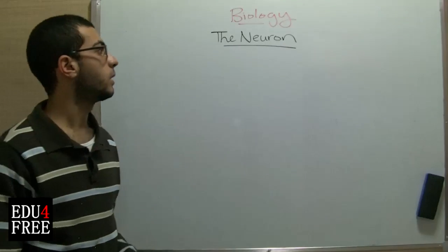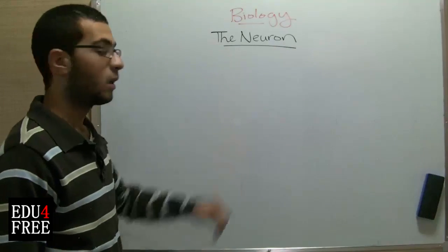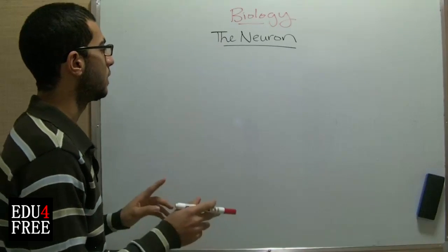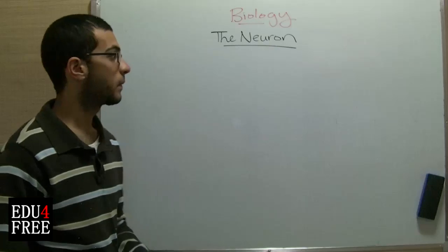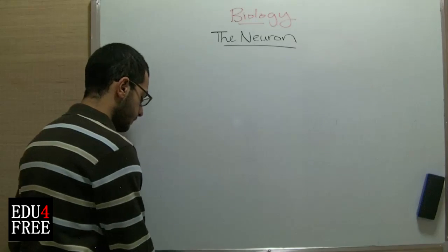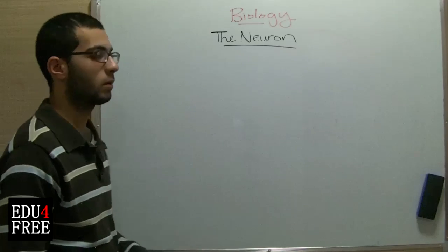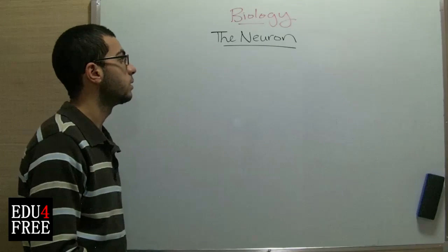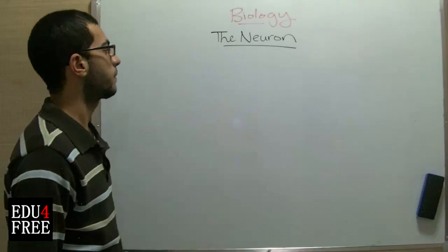Salaam alaikum. Today we will talk about the neuron. Previously we talked about the central nervous system, the peripheral nervous system, and the autonomic nervous system, as we addressed the nervous system as a whole. So today we will talk about the unit of structure and function of the nervous system, which is the nerve cell or the neuron.